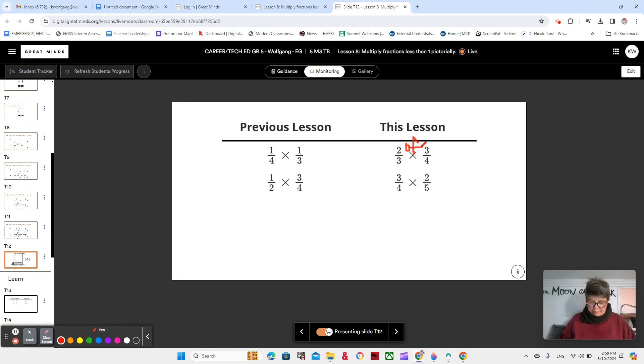So what about a number line to help us find this product? That's an interesting thing to think about, right? 2/3 of 3/5. Let's see if we can make a number line for that. So we're going to start with a number line from 0 to 1, starting at 0 and going up to 1.